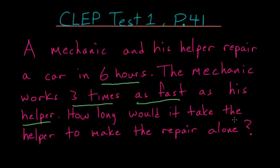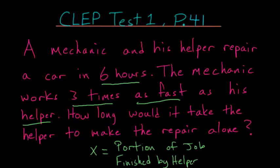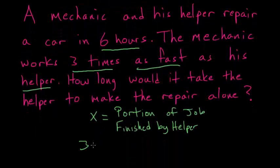One approach to this problem is to make a variable x for the portion of the job finished by the helper. From this we can conclude that 3x would be the portion of the job finished by the mechanic since he works three times as fast.